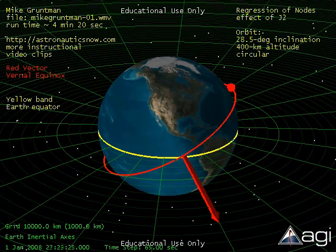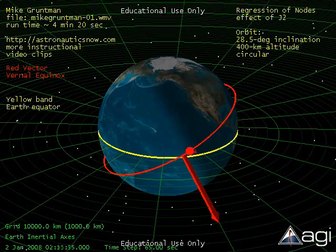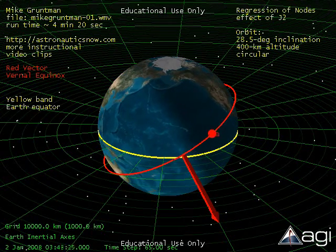The red vector facing you is the vernal equinox vector. The Sun is on the left illuminating the Earth. The yellow band on the surface is the equator.